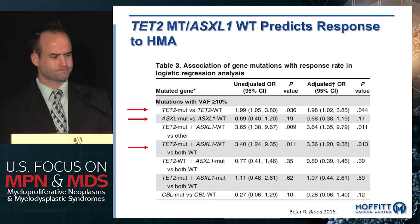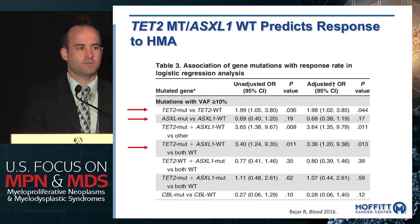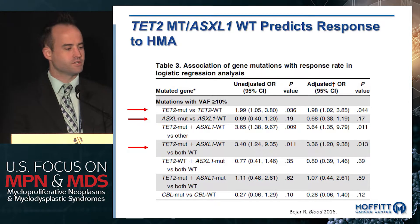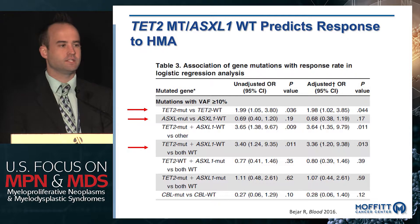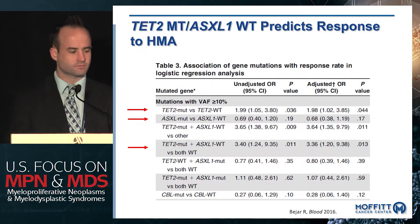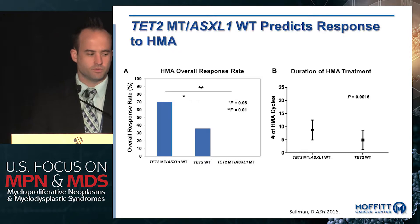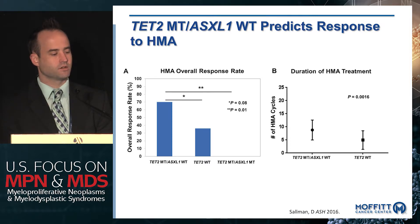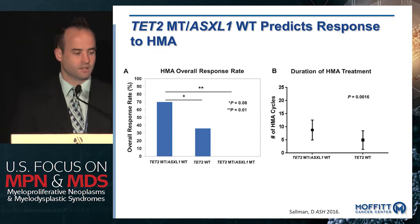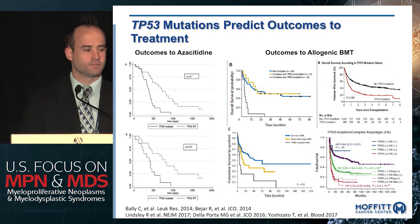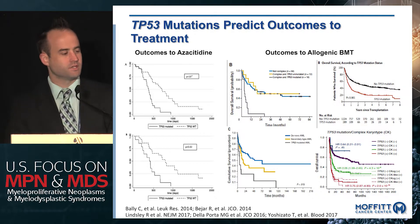Regarding predicting treatment response, there is some controversy, but in general a TET2 mutation in the absence of ASXL1 mutation predicts for response to hypomethylating agents. We confirmed this: TET2-mutant patients without ASXL1 mutations had a very high response rate, whereas none of the co-mutant patients with both TET2 and ASXL1 mutations responded in our cohort, and the median duration of therapy was significantly longer with the favorable genotype.